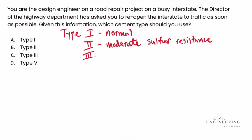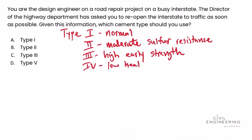Type III is a high early strength cement, which means it hardens quicker than the Type I normal cement. Type IV cement has low heat of hydration — you'll typically see this used in large projects such as a dam, where you want to keep the heat of hydration low as the cement and concrete sets.